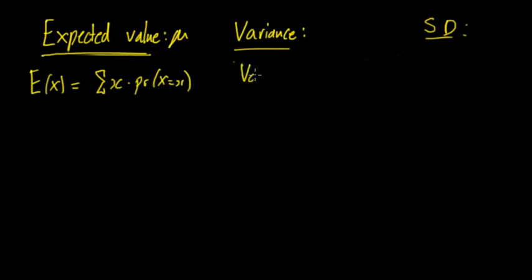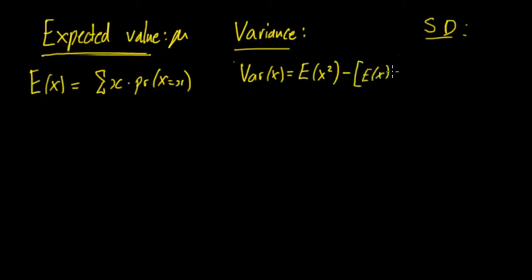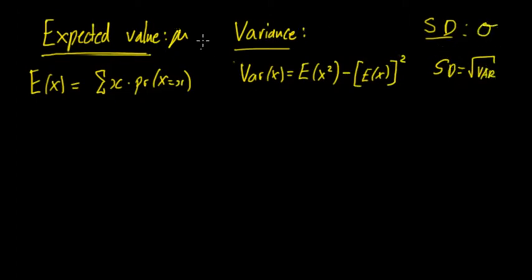Also with the variance, you have Var(X) = E(X²) − [E(X)]². So you take all the outcomes squared, find their expected value, and then subtract the expected value of X squared. You've seen that before, and if you remember, the standard deviation is equal to the square root of the variance.